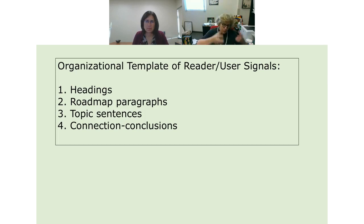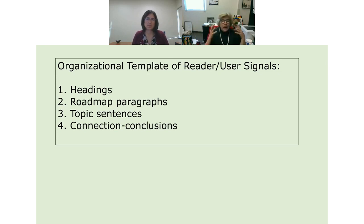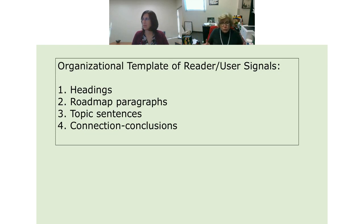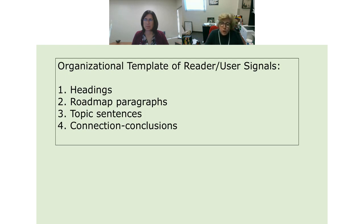I talk about readers as sequential users. Users have an agenda — where's the res ipsa discussion? where's the breach discussion? We've got to write in a way that satisfies both: it makes sense linearly for readers, and users can find the res ipsa section, the breach section, the discussion of the Beasley or Smith case. Using these signals to the reader can make a big difference.